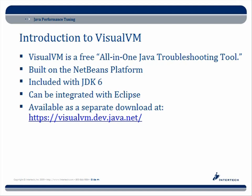Now, an introduction to VisualVM. It's a free, all-in-one Java troubleshooting tool built on the NetBeans platform. It's included with JDK 6 — I mention this repeatedly because many developers had no idea it was already on their computer. If you don't have it, you can download it at visualvm.dev.java.net. It can also be integrated with Eclipse. If you're using NetBeans, the recommendation is to use the NetBeans profiler, which works just as well and is what VisualVM is based on.